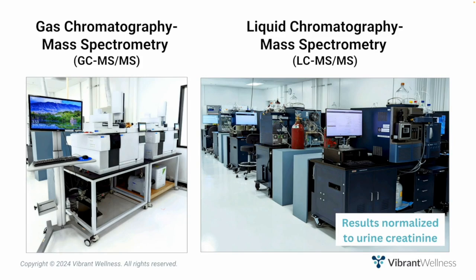The Vibrant Organic Acids Test uses gas chromatography tandem mass spectrometry, or GC-MS/MS, for quantitative detection of organic acids. Additionally, catecholamine metabolites and serotonin and kynurenine metabolites are measured using liquid chromatography tandem mass spectrometry methodology, LC-MS/MS. These are powerful analytical techniques that combine the separating power of gas or liquid chromatography with the highly sensitive and selective mass analysis capability of triple-quadrupole mass spectrometry.